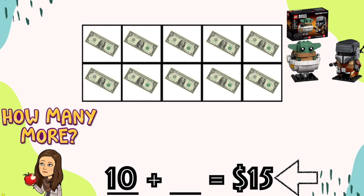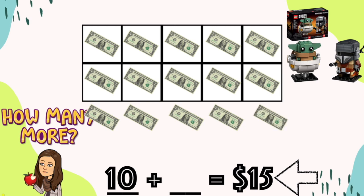You're right! We're going to count on from 10. Count with me: 11, 12, 13, 14, 15. How many more dollars did we need? We needed five more dollars. 10 plus 5 equals 15.